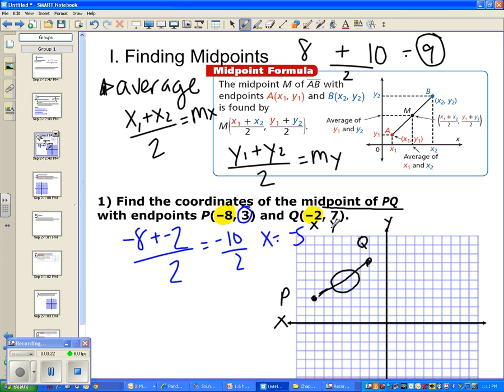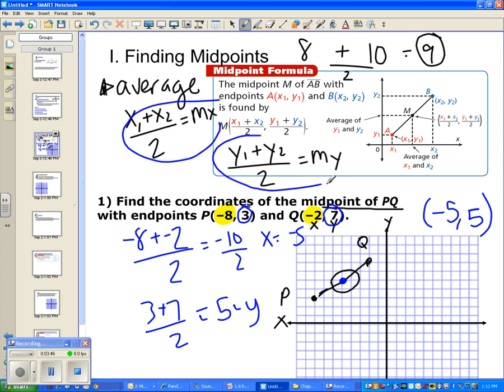Then you're going to do the same thing for the y's. So 3 plus 7, that's 10 divided by 2, so y should be 5. So your answer will be the x is negative 5, the y is positive 5. Let's see if that looks good on our graph. Okay, 1, 2, 3, 4, 5, 1, 2, 3, 4, 5. Bam! We're absolutely correct. I would write down these two formulas because that's going to help us for this second thing we're doing, which is finding endpoints, which is a little trickier.